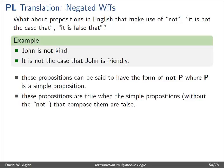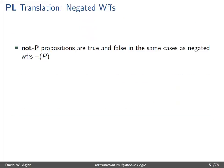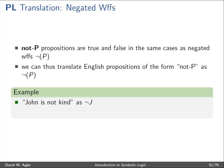These propositions are true when the simple propositions that compose them — the propositions without the "not" or "it's not the case that" — are false. So, "John is not kind" is true if and only if "John is kind" is false. Similarly, "it's not the case that John is friendly" is true if and only if "John is friendly" is false. Not-P propositions are true and false in the same cases as negated well-formed formulas in the language of propositional logic. This suggests we can translate English propositions of the form not-P as negation-P. For example, we can translate "John is not kind" as not-J, and "it is not the case that John is friendly" as not-F.